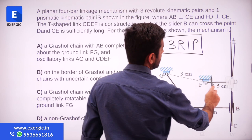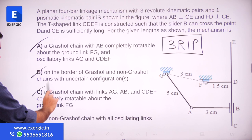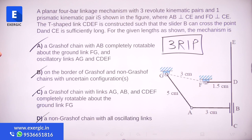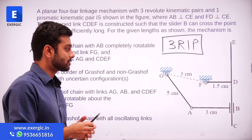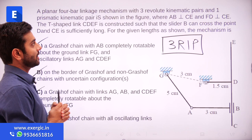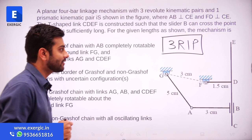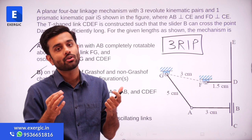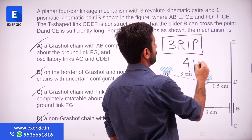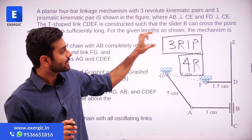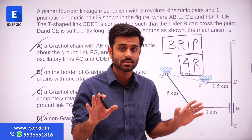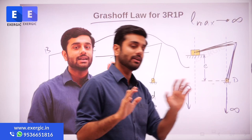The four options are about the motion of this mechanism — whether it is a Grashoff or non-Grashoff chain, or on the border with uncertain configuration. The most important thing given is that this is a 3R1P chain. If you try to apply the usual Grashoff law that you know, you cannot do that directly — that Grashoff law is for a 4R chain (4 revolute joint chain). If you don't know the concept of Grashoff law for 3R1P chain, you simply cannot solve this question.